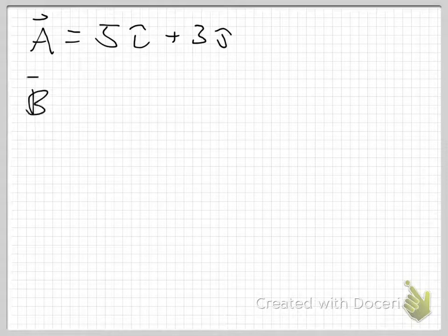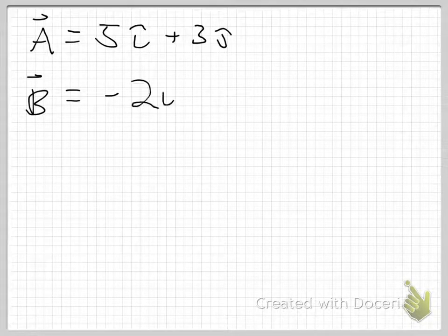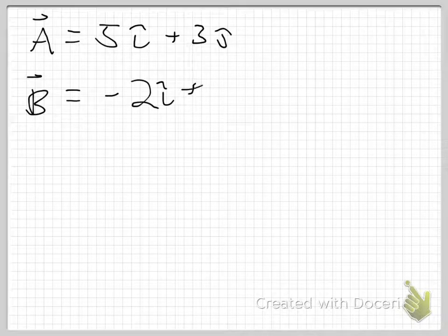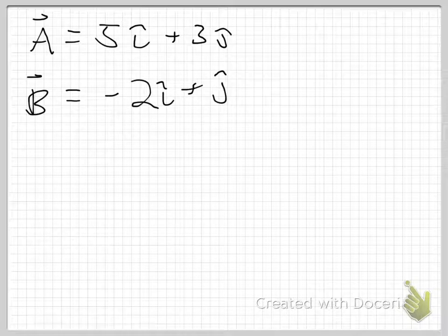Vector B then was minus 2î + ĵ. I'm going to leave off the 1 as a coefficient. We all can see, or hopefully we can see, that there's an implied 1 here. 1 times anything is just that thing, so it's not a big deal if I don't write the 1.